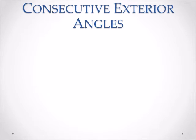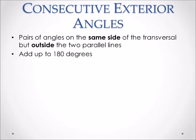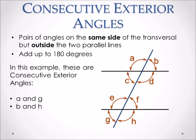Consecutive exterior angles are on the same side of the transversal, but since we're talking about exterior, they are on the outside of the two parallel lines. They also add up to 180 degrees. Looking at this example, the consecutive exterior angles are A and G, and B and H — same side of the transversal but on the outside of the two parallel lines.